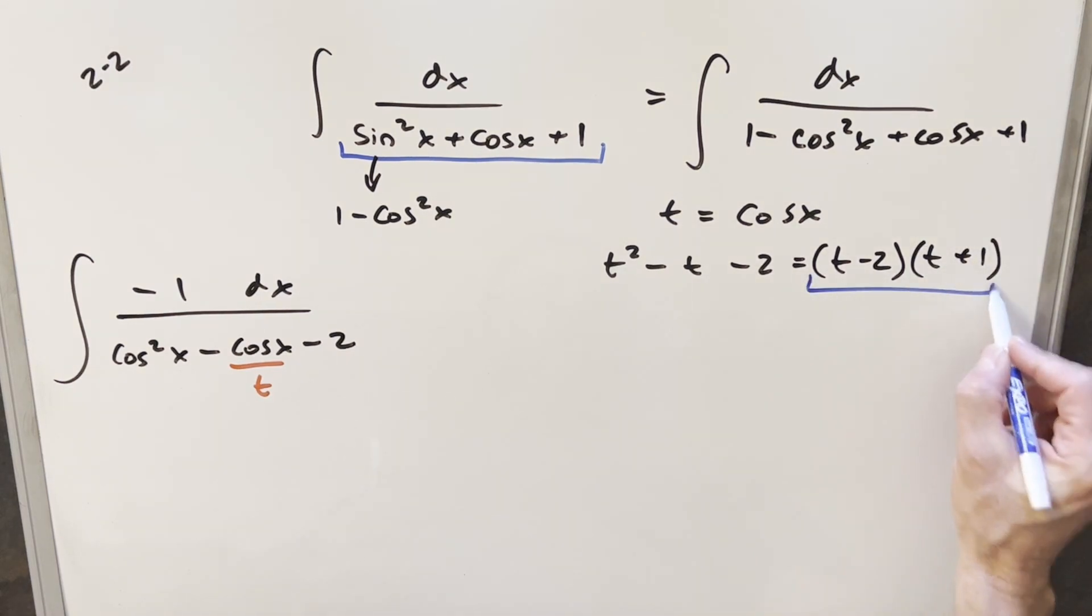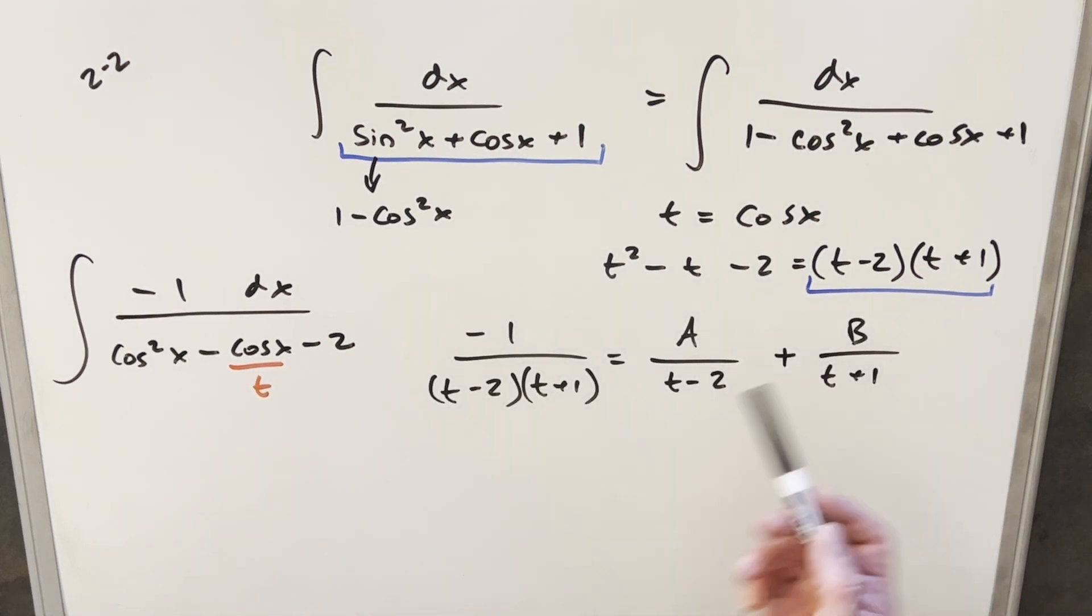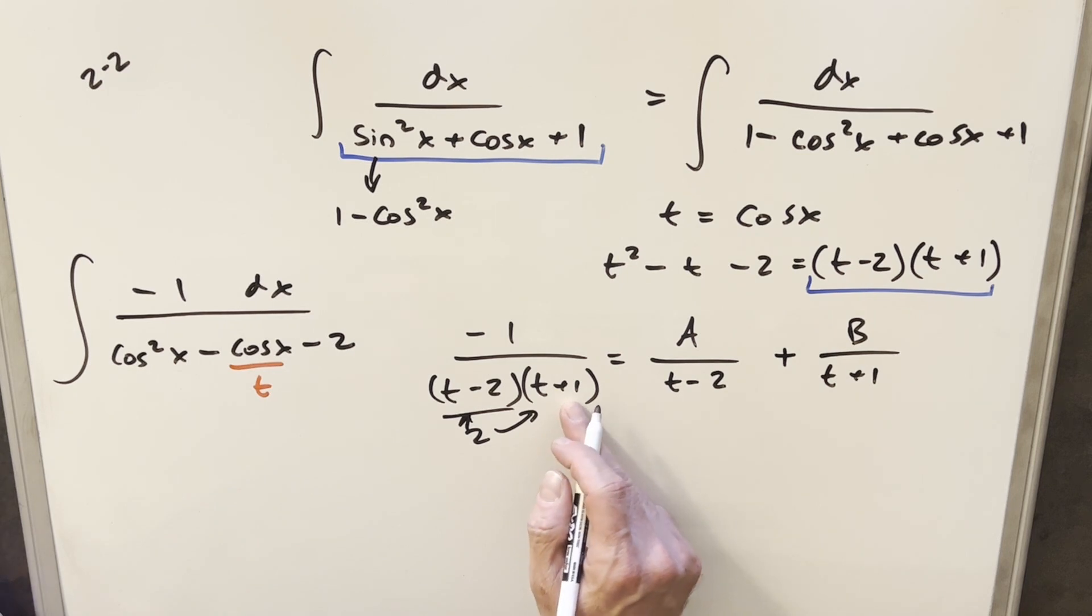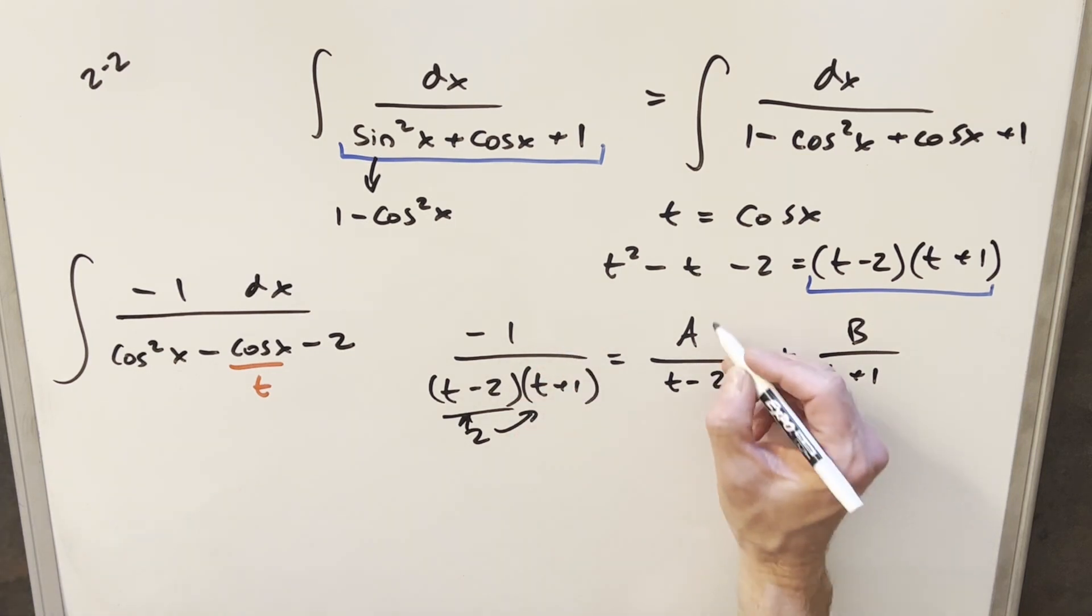From here, what I can do is take this and we can do partial fractions on this. Now we'll go ahead and get our a and b value using the cover-up method. Starting with this first term, I'm going to plug a 2 in here and a 2 in here. We'll cover up this first part. When I plug a 2 in here, I have a 3, minus 1 over 3. So our a value is going to be minus 1 third.